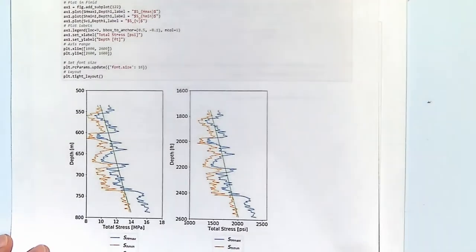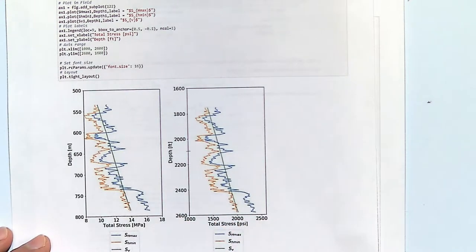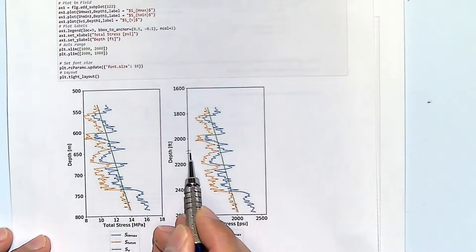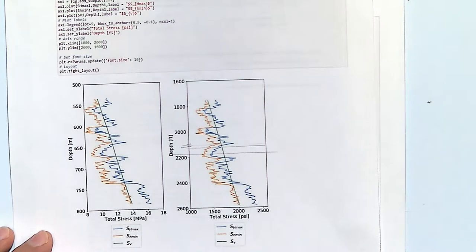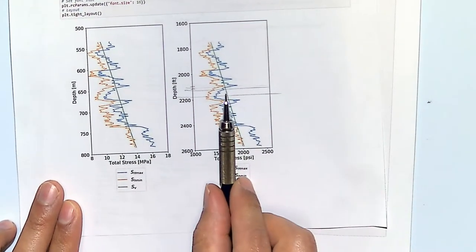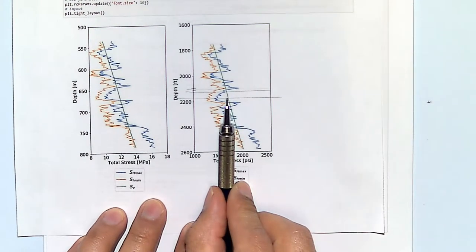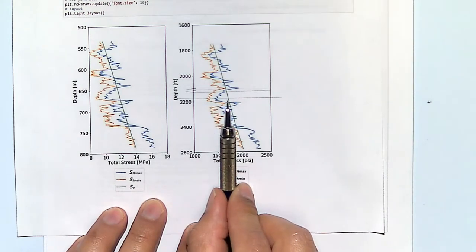The perforations are at 2,130 to 2,160 feet. So this is the 2,100–2,130–2,160 ft region — you will be putting perforations here. Before we answer what happens, what is the stress regime at that depth? Normal faulting — correct — because we have Sh minimum, Sh maximum, and Sv.